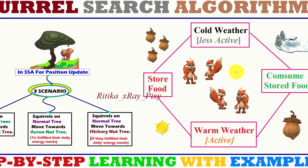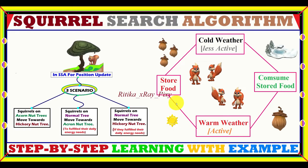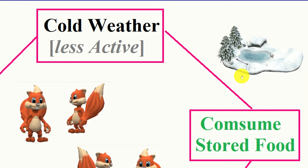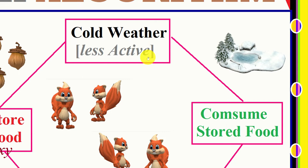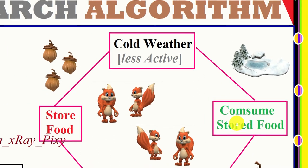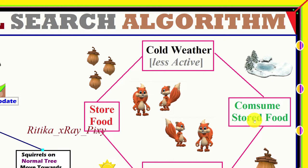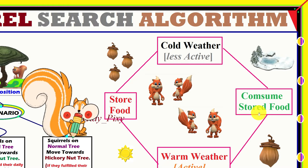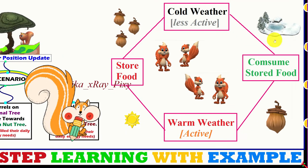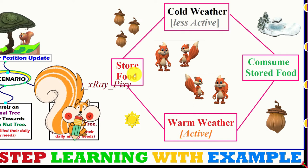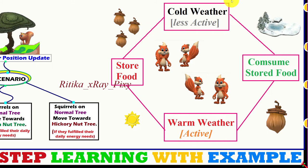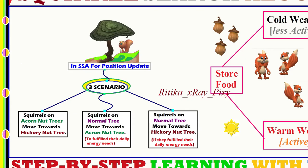The main model used in the Squirrel Search Optimization Algorithm is inspired by the food foraging behavior of flying squirrels. During winter, flying squirrels become less active due to cold weather and consume only stored food. They especially store acorns and hickory nuts to consume in winter. When winter is over, they become active again and store food for the next winter. This process is repeated throughout their lifetime.